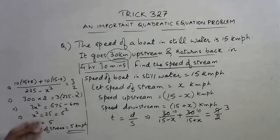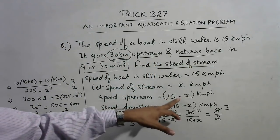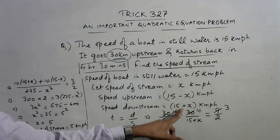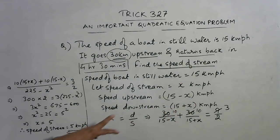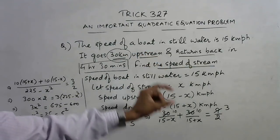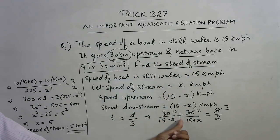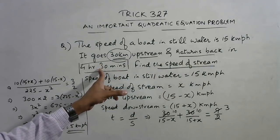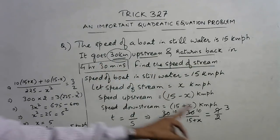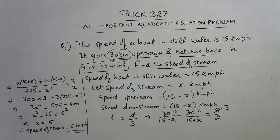So a very easy question, just a little bit of understanding of upstream motion wherein the speed reduces and downstream motion wherein the speed increases, and always use the time formula, that is distance upon speed. Distance upon speed is the time to go 30 kilometer upstream, this is the time to come back. The total time added together gives us the time which is given in the question, 4 and a half hours, that is 9 by 2 hours. After that it is simple simplification to get to our answer of 5 kilometer per hour.